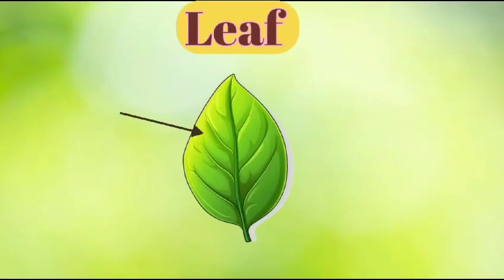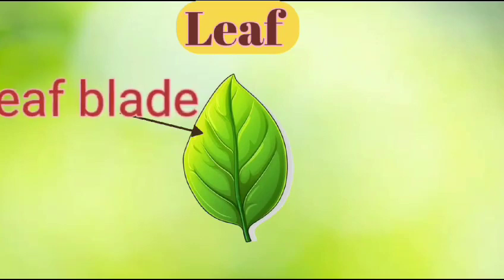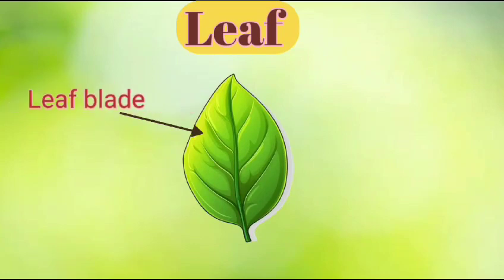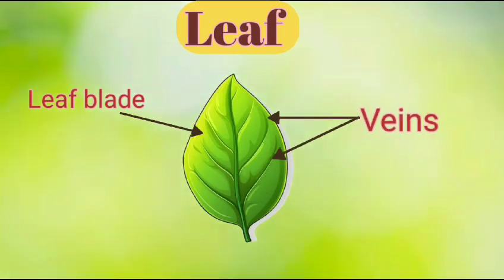Leaf. The flat surface of a leaf is called the leaf blade. If you look carefully, you will find a lot of lines running across it. These lines are called veins.